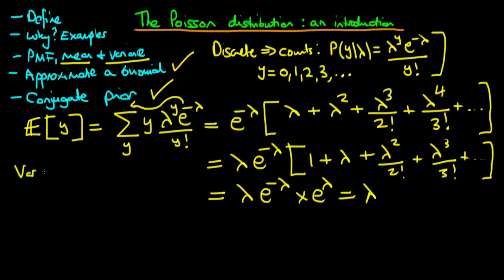As for the variance, you can prove it in exactly the same way, and it turns out the variance of the count is also lambda. The Poisson distribution is only appropriate when the mean and variance are very similar. If the variance is greater than the mean — so-called over-dispersed data — it may be more adequate to use a negative binomial distribution, which we'll discuss in the future.